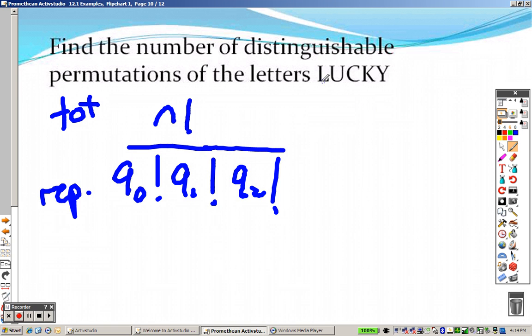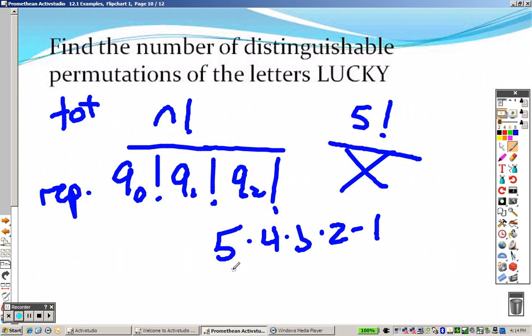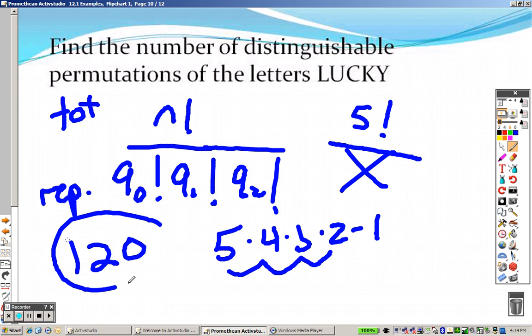So how many total letters do we have? I have 1, 2, 3, 4, 5. So it's 5 factorial over any repeated ones. Are there any repeated letters? No. So really, it doesn't matter. The bottom doesn't even matter at all. So really, this is just 5 factorial, which is 5 times 4 times 3 times 2 times 1. And that's 20, 20 times 3 is 60. 60 times 2 is 120. So your answer to this problem is 120.